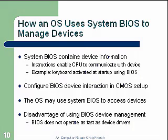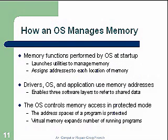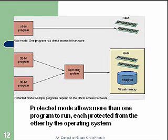The OS manages memory. At startup, the OS launches utilities to manage memory and assigns addresses to each location of memory. Drivers, the OS, and applications all use memory addresses to enable the three software layers to refer to shared data. The OS controls memory access in protected mode — the address space of a program is protected. Virtual memory expands the number of running programs. Protected mode allows more than one program to run, each protected from the other by the OS, creating virtual areas so they access memory not directly but through the OS.